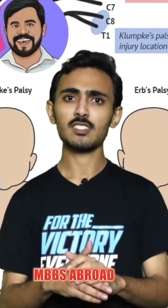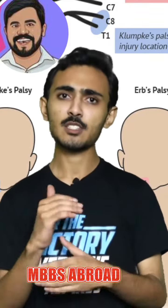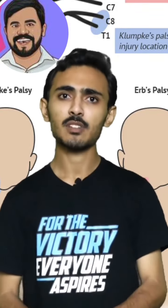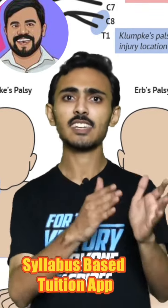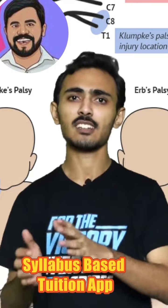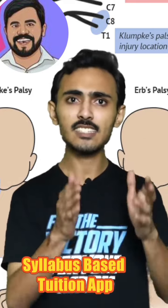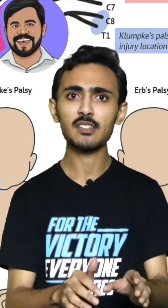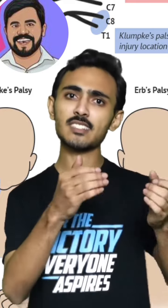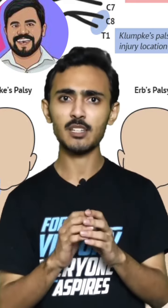Now we are going to discuss Klumpke's paralysis. Klumpke's is called C8T1 root value. C8T1 root value will damage the muscles supplied by C8T1.